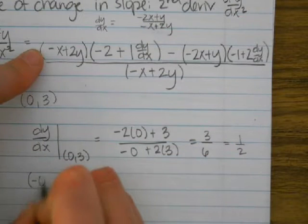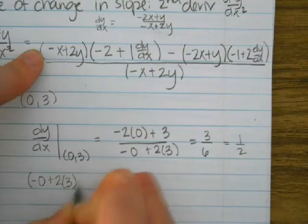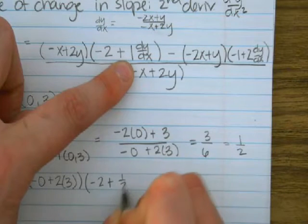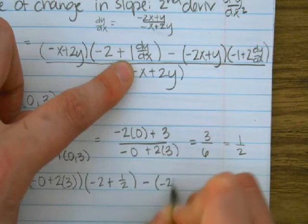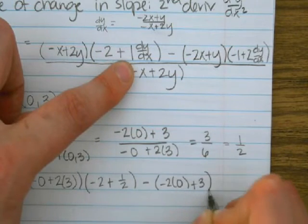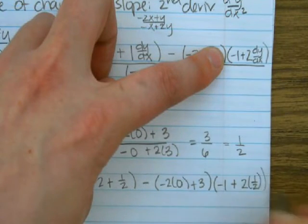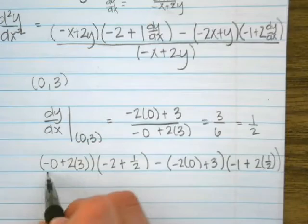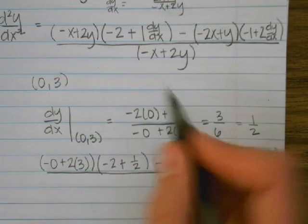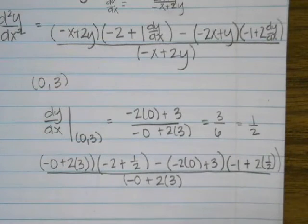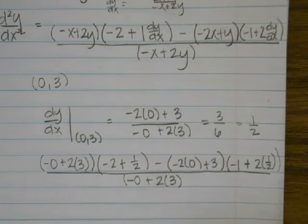So I got negative 0 plus 2 times 3 times negative 2 plus 1 times 1 half minus negative 2 times 0 plus 3 minus 1 plus 2 times 1 half. So now we just have to simplify that, can't find my notes.